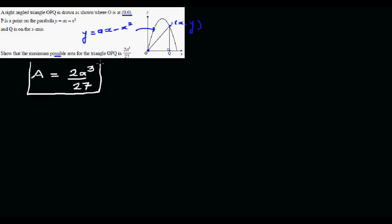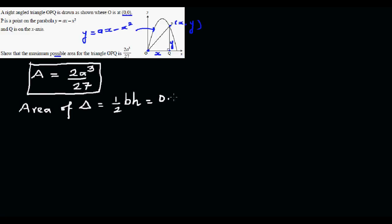Since P is an arbitrary point with coordinates X comma Y, the X value is the base and Y is the height. The area of any triangle is half base times height — that is 0.5 times B times H. So the area is 0.5 times X times Y. For maximization problems, we always use differentiation.